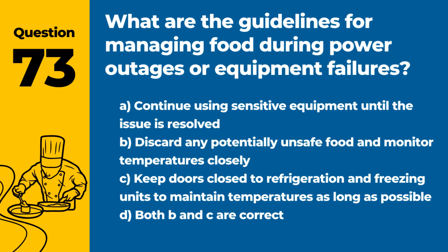Question 73. What are the guidelines for managing food during power outages or equipment failures? Answer: D. Both B and C are correct — discard any potentially unsafe food and keep doors closed to refrigeration and freezing units to maintain temperatures as long as possible. Minimizing food safety risks during power outages requires careful temperature management and disposal of potentially compromised foods.